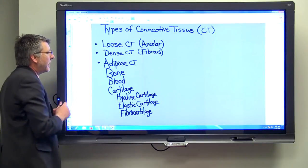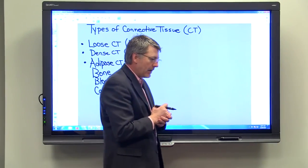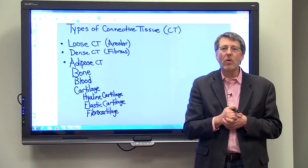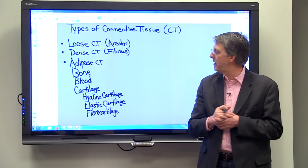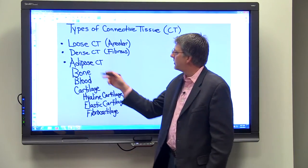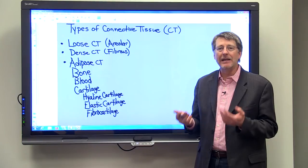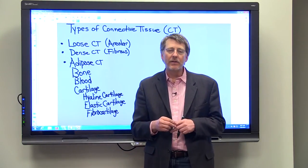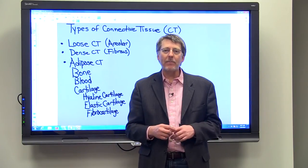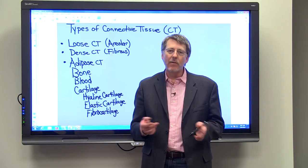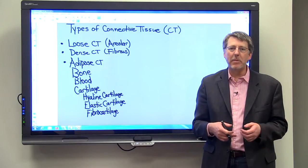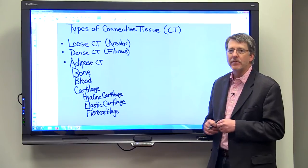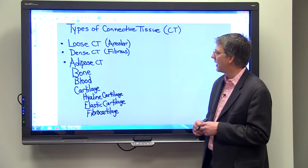Adipose tissue is found in animals and is also called fat tissue. Adipose tissue stores fat and can be very useful — it's involved with cushioning, protecting, and insulating. In a face-to-face class I often ask students to name animals that have a lot of adipose tissue, and the number one answer is usually a whale, with others saying bear or walrus. Those animals have a lot of adipose tissue to help insulate them against the cold.